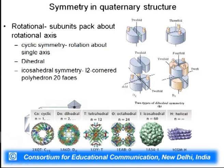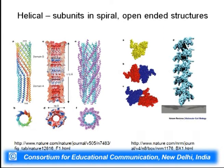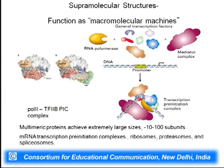Below are examples of cyclic, dihedral, tetrahedral, octahedral, and icosahedral symmetries found across many proteins. Helical subunits result in open-ended tubular kinds of structures — open-ended helical subunits arranged in a spiral. Another aspect of assembly is that some supramolecular structures form only when needed to carry out a metabolic function, such as DNA replication, protein translation, or RNA regulation.